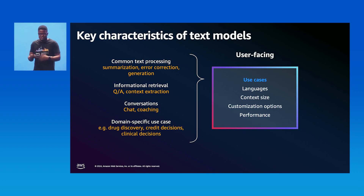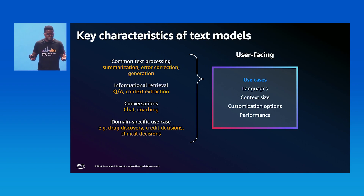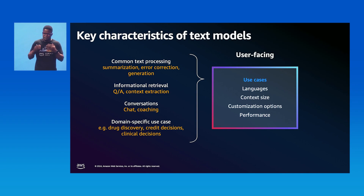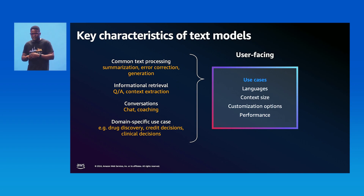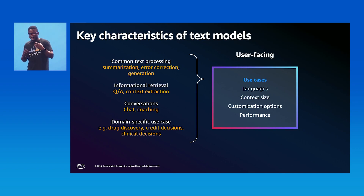Now shifting to user-facing properties that define the end-user experience. First, supported use cases: some models support broad domains like summarization, question answering, and chatbots because they're trained on diverse, vast data. However, there are cases requiring domain expertise and high accuracy — such as drug discovery, protein folding, and credit scoring — where domain-specific LLMs are needed. By adapting models for specific domains through fine-tuning, these domain-adapted models gain both the broad capabilities of the base model and the specialized expertise from domain data.